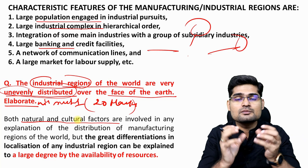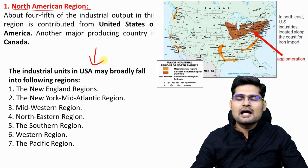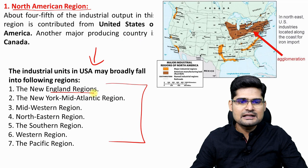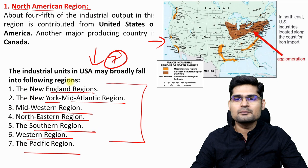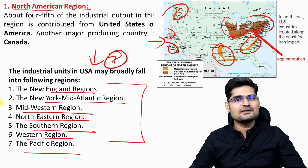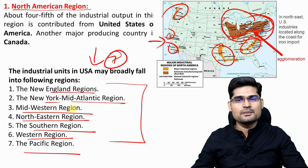The North American region is dominated by America and Canada. In the USA, there are seven regions: New England, New York and Mid-Atlantic, Midwestern, Northeastern, Southern, Western, and Pacific. The biggest concentration is in the Northeastern portion of the US. You can observe and practice marking all seven regions on the map.